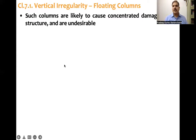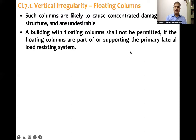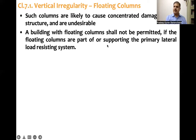The code clearly states that floating columns are likely to cause concentrated damage in the structure and are undesirable. A building with floating columns shall not be permitted if the floating columns are part of, or are supporting, the primary lateral load resistance system. There are two conditions: the column is part of the lateral load resistance system, or it is supporting that primary system.